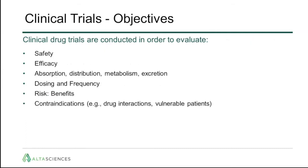For clinical trials evaluating any kind of botanical, drug, or synthetic, the clinical drug trials evaluate safety, efficacy, absorption, distribution, metabolism, and excretion — what the body is doing to the drug — as well as dosing and frequency. They evaluate risk versus benefits, and most importantly, include contraindications: whether the drug is contraindicated with certain vulnerable patients, or poses risk if combined with other drugs.